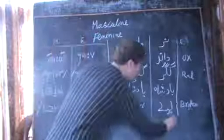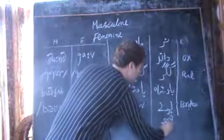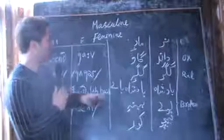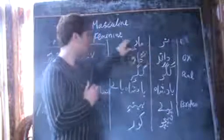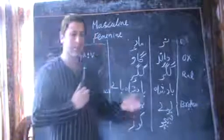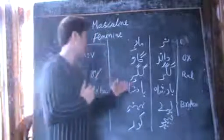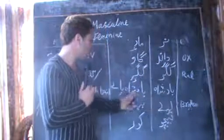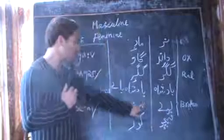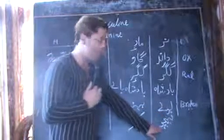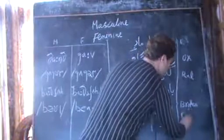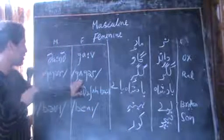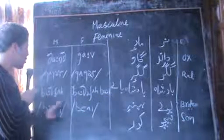Now, this is nar and this is mad. So: dan / gal, the ox and its feminine; gagur / gagur for rat and mouse; badshah / badshah by for king and queen; boy / beni for brother and sister; and 'nichu' meaning son, and 'kur' meaning daughter. So I will write here: nichu for son, and kur is daughter. The transcription: dan, gal, gagur, gagur, badshah, badshah by, boy, beni.